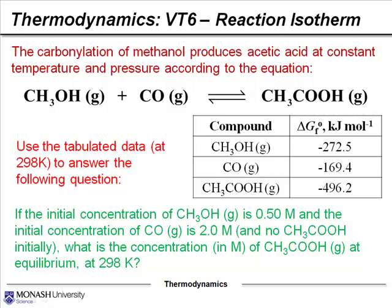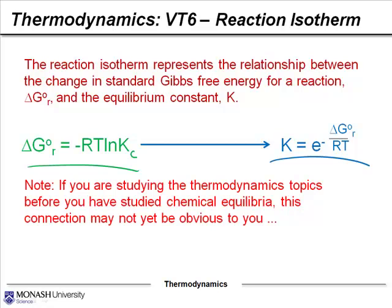Here's an example question. Methanol reacts with carbon monoxide to give acetic acid. The question says to use the tabulated data: the initial concentration of methanol is 0.5 M, the initial concentration of carbon monoxide is 2 M, and there's no acetic acid initially — what's the concentration of acetic acid at equilibrium? Notice that you're not given a value for the equilibrium constant at all; you have to use the ΔG°f values to determine ΔG° for the reaction, which you then substitute into the reaction isotherm equation, solving to find K.